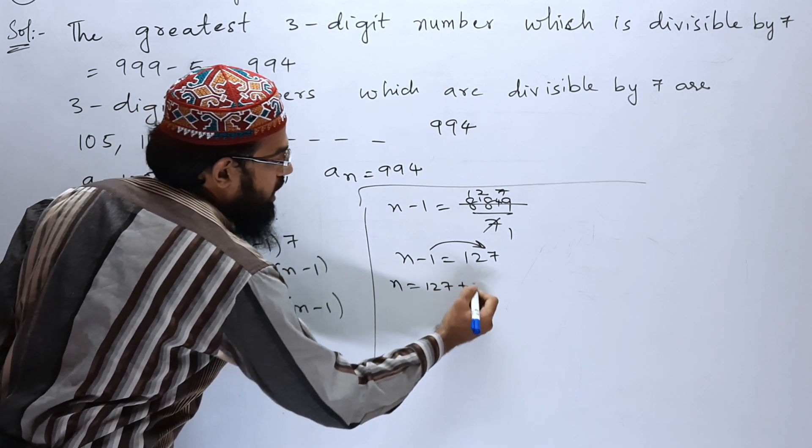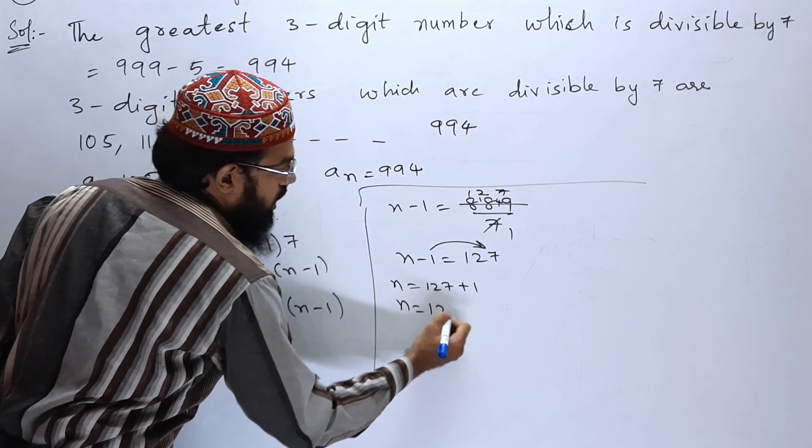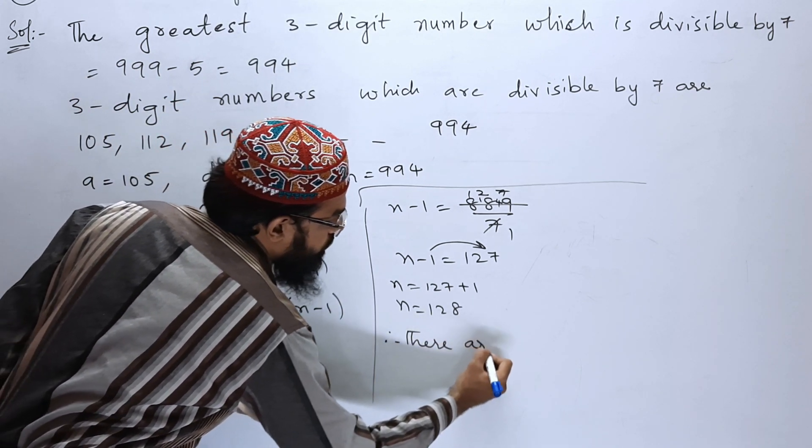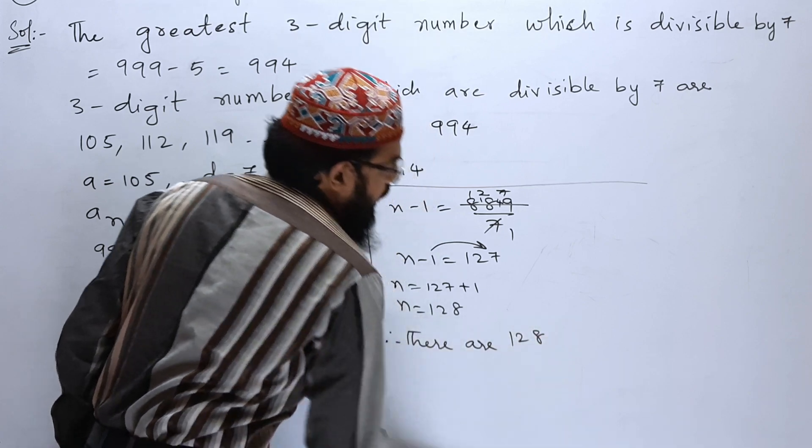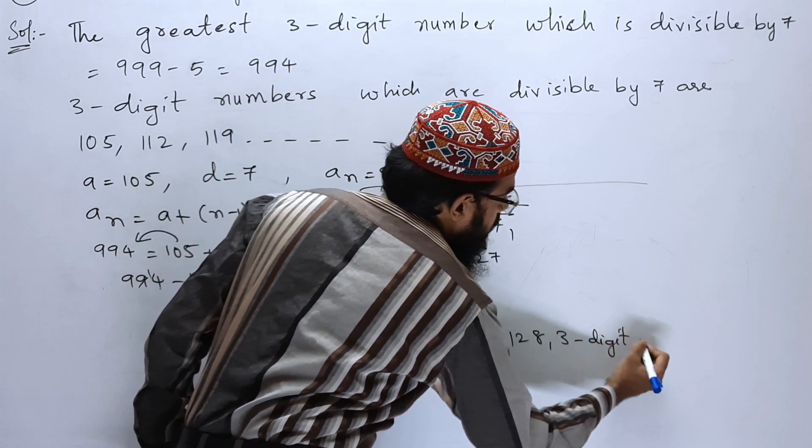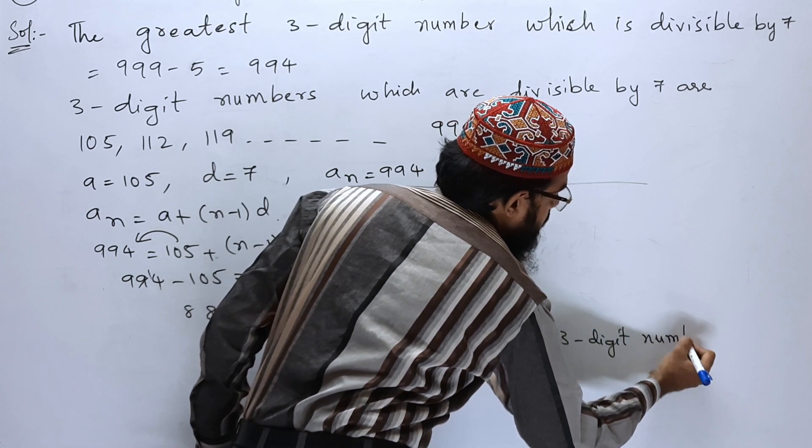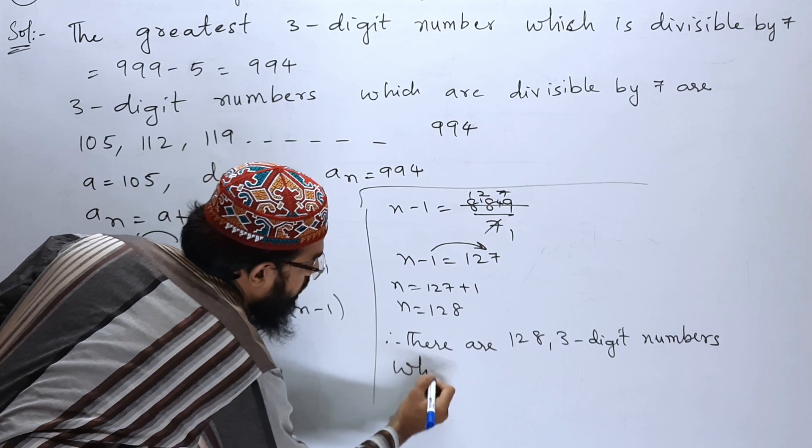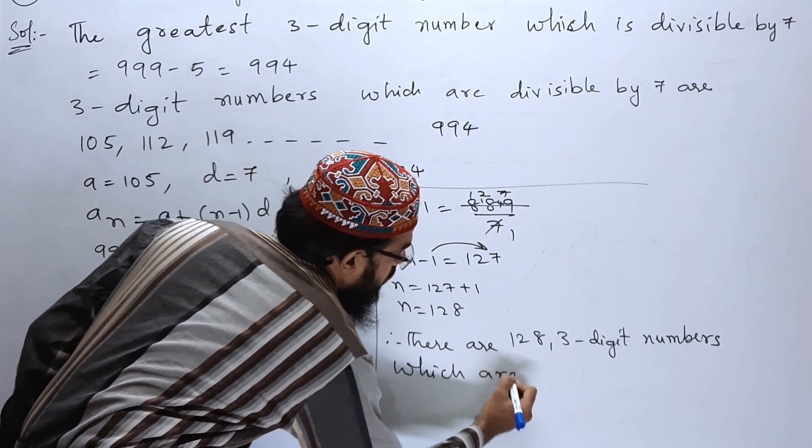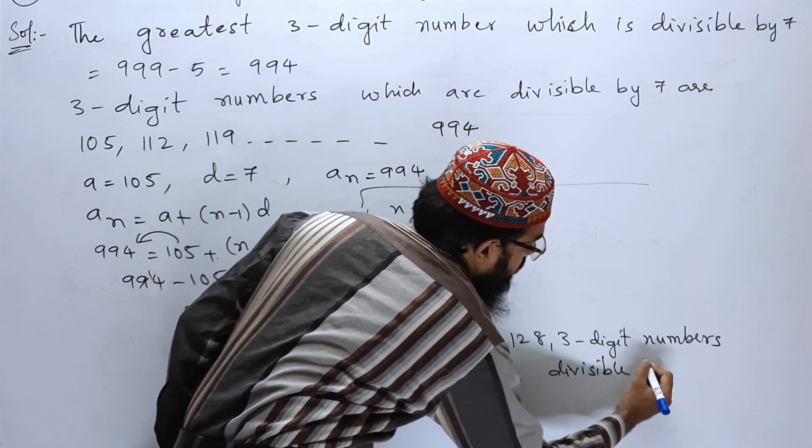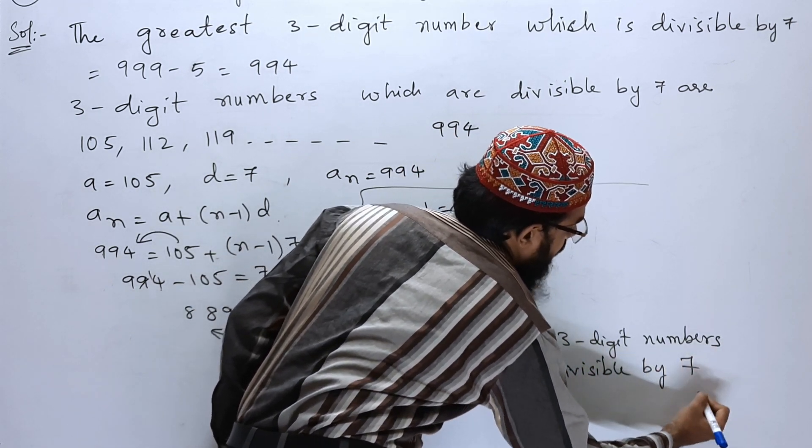Minus 1 goes to that side. It will be n is equal to 127 plus 1, n is equal to 128. So therefore, there are 128 three-digit numbers which are divisible by 7.